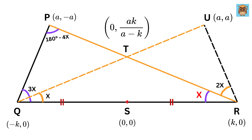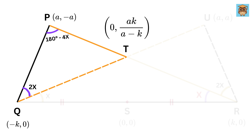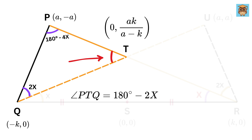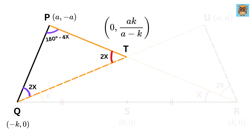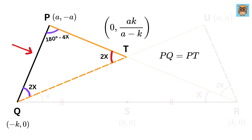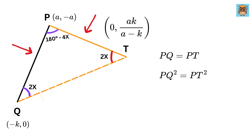Here comes the second magic. If angle UQR is X and angle PQR is 3X, then angle PQT will be equal to 2X. Now consider triangle PQT. If angle PQT is 2X, and we have already found angle QPR, or QPT, which is 180 minus 4X, then angle PTQ equals 180 minus 2X minus (180 minus 4X), which gives 4X minus 2X, or 2X. This means triangle PQT is an isosceles triangle, and thus side length PQ equals side length PT.